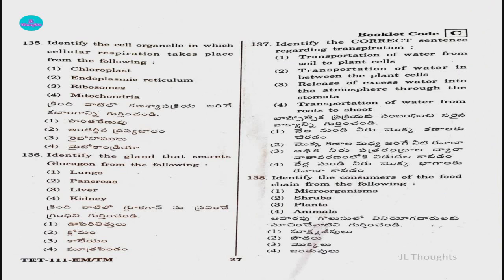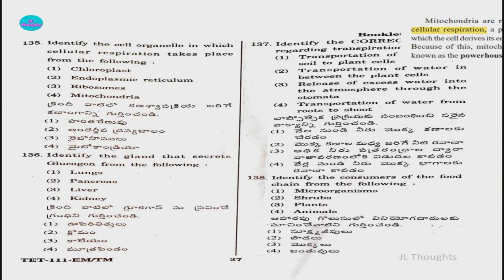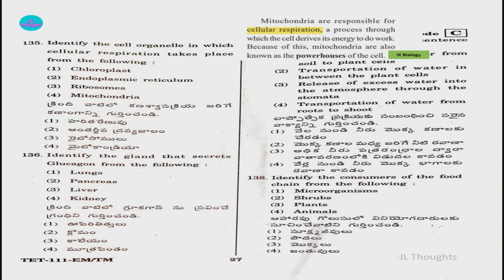Question number 135: Identify the cell organelle in which cellular respiration takes place. Options: chloroplast, endoplasmic reticulum, ribosomes, or mitochondria. In the class 9 biology textbook, it is clearly given that mitochondria are responsible for cellular respiration. So the answer is option four, mitochondria.